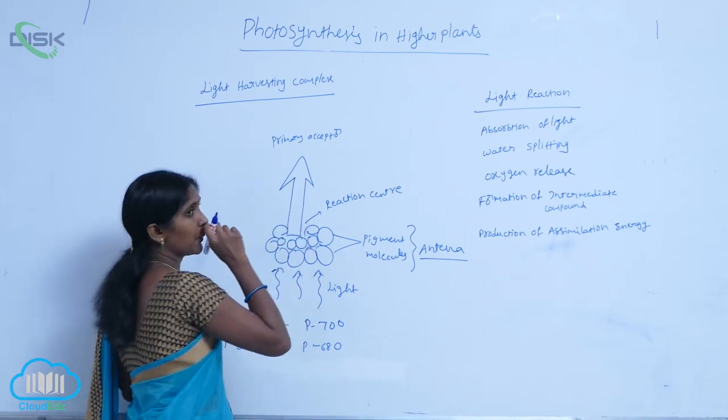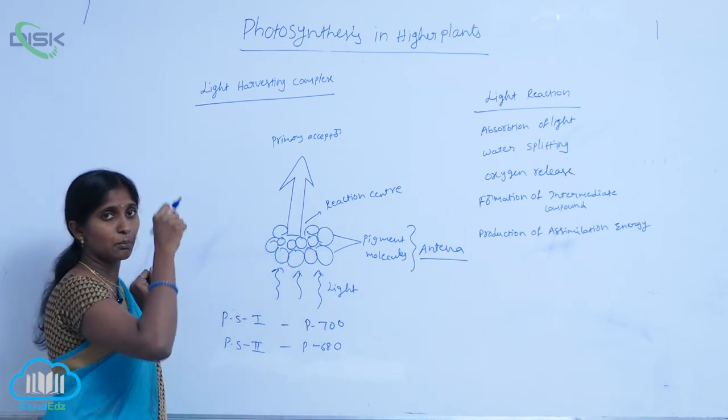The chlorophyll A is excited and it gives an electron to the primary acceptor.